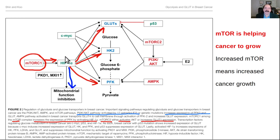mTOR starts doing other things you don't want, pushing you into this growth replication pathway: more glucose being taken into the cell, increased glucose transporters on the cell membrane, and potentially in cancer, a shift to hexokinase 2 instead of hexokinase 1 at the beginning of glycolysis.